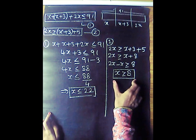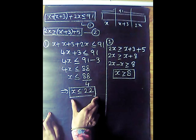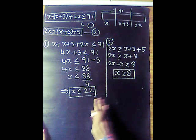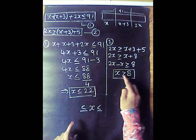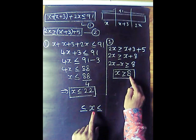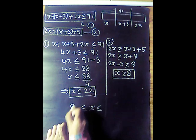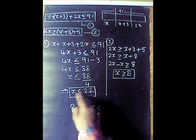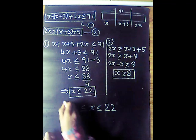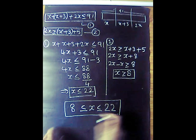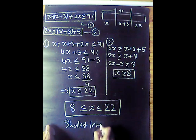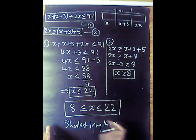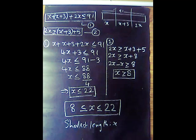So x is greater than or equal to 8 and x is less than or equal to 22. Therefore x lies between 8 and 22. The shortest length x satisfies 8 ≤ x ≤ 22.